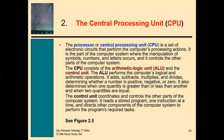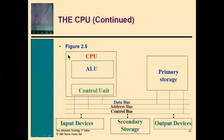The control unit coordinates and controls all other parts of the computer system. It reads stored programs one instruction at a time and directs other components of the computer system to perform the required program. The CPU is divided into two parts — the ALU and the control unit — and the control unit impacts all the other devices.